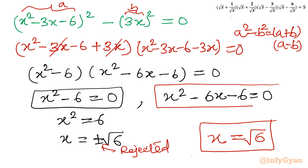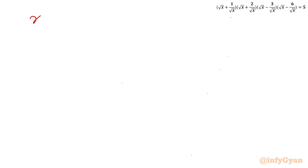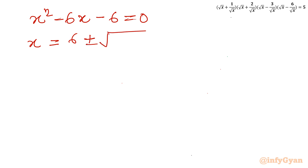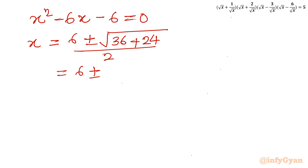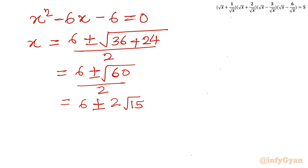Now for the second quadratic equation: x² - 6x - 6 = 0. Using the Sridharacharya (quadratic) formula, x = (-b ± √(b² - 4ac)) / 2a. Here b = -6, so x = (6 ± √(36 + 24)) / 2 = (6 ± √60) / 2 = (6 ± 2√15) / 2 = 3 ± √15. So there are two candidate solutions from this equation.